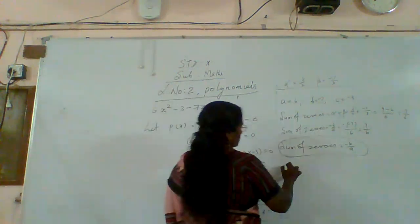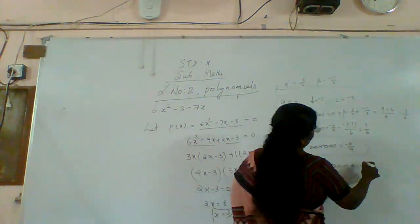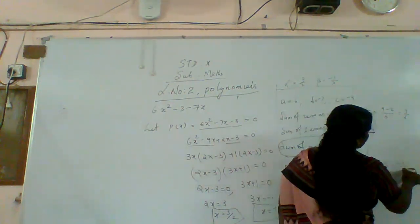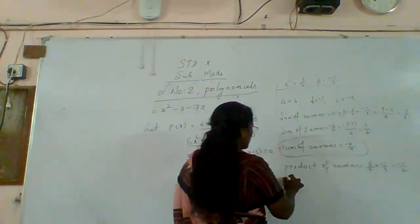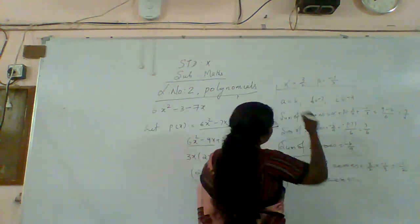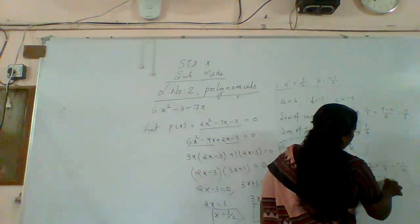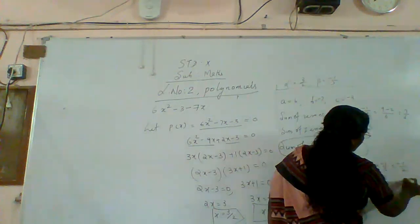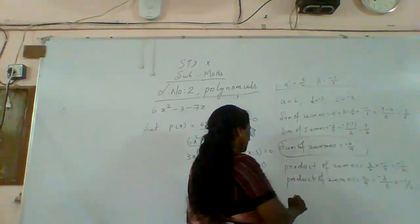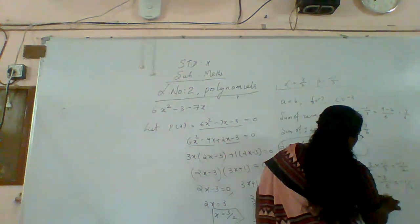Same way, product of zeros: alpha beta equals three by two into minus one by three. The threes cancel, giving minus one by two. By formula, product of zeros equals c by a: c is minus three divided by a which is six, that is minus one by two. Here also the product of zeros is minus one by two. Therefore product of zeros equals c by a — verified.